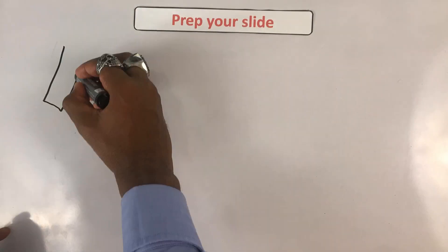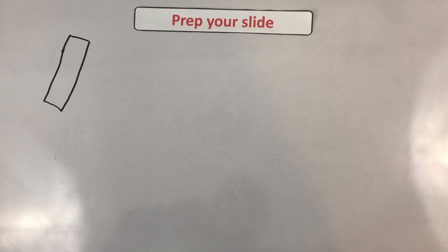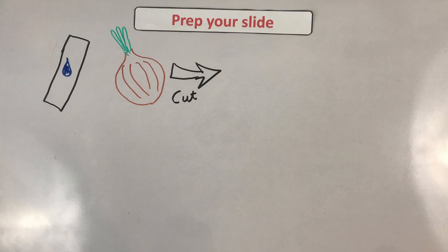To prepare your sample, in this example, we'll be making an onion slide, these are the steps. Number one, you add a drop of water to your slide. Number two, you separate a layer of your onion. Number three, you peel off a layer of the epidermal tissue from the inner side of your onion. Number four, you use forceps to place this on your water drop.